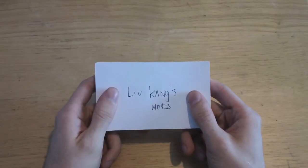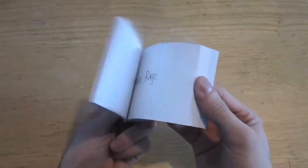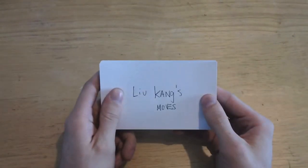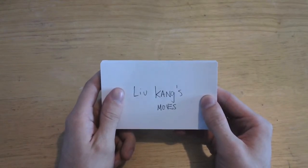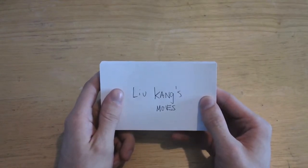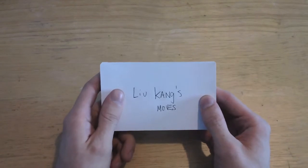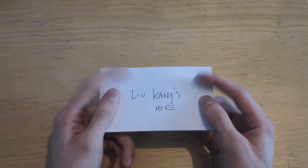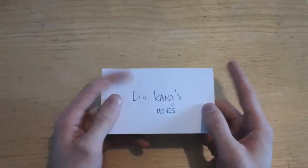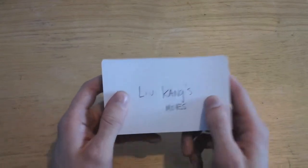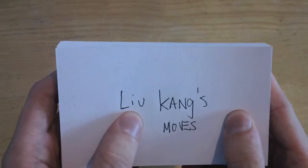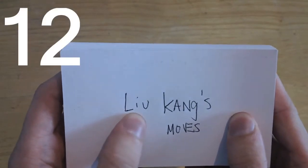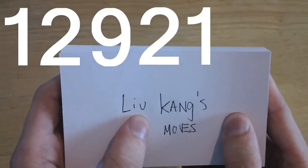The approach I took to learning Mortal Kombat was to pick a character and flashcard all his moves — I figured that would be the best way to get good at the game. I picked Liu Kang, and would you believe it, he's got 78 moves. And let's take a closer look at his name: Liu Kang. L is the 12th, I is the 9th, U is the 21st.